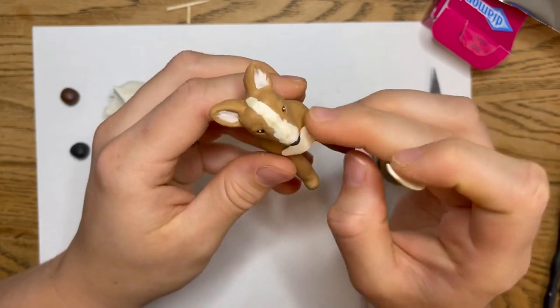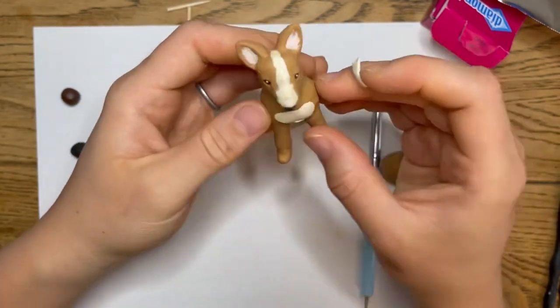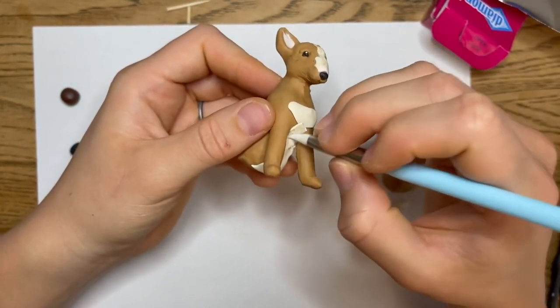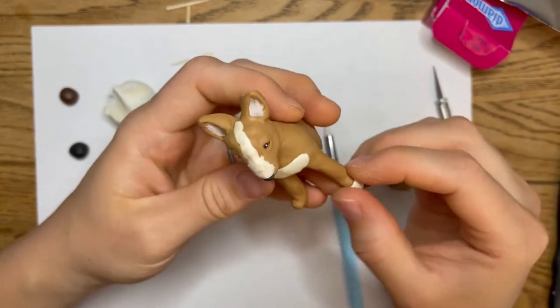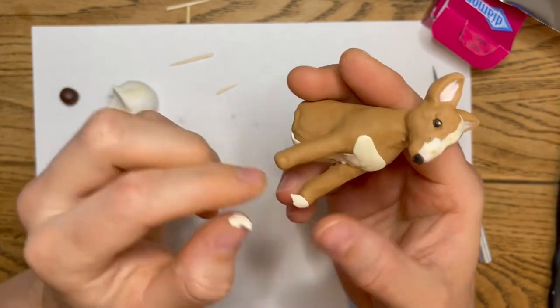Some clay is easier to smooth together than others. It just depends on which type you're using and which color. And you can add a little bit to the paws if you want. I'll go like that.